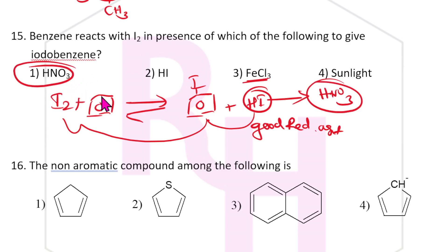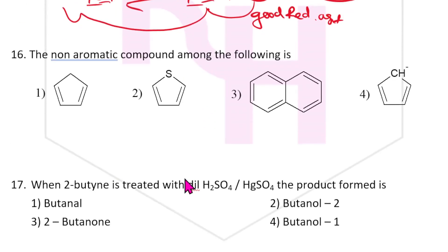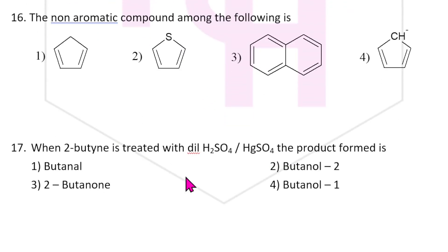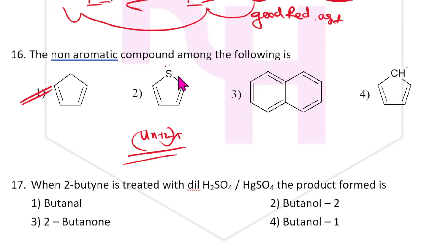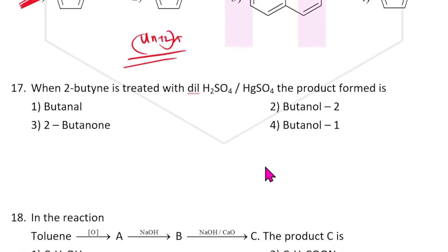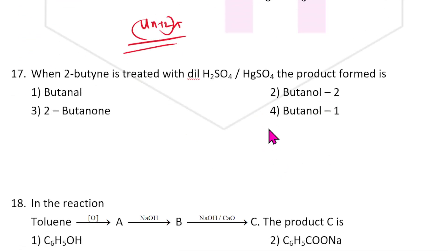15th question: non-aromatic compound — aromatic compounds follow 4n+2 pi electrons (Hückel's rule). Check pi electrons: 6, 10, 6 — those follow the rule. The one that cannot follow this rule is non-aromatic. Answer is one.